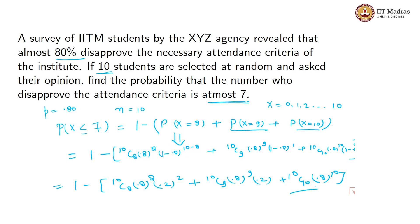This will be your probability that the attendance criteria is disapproved by at most 7 students. Thank you.